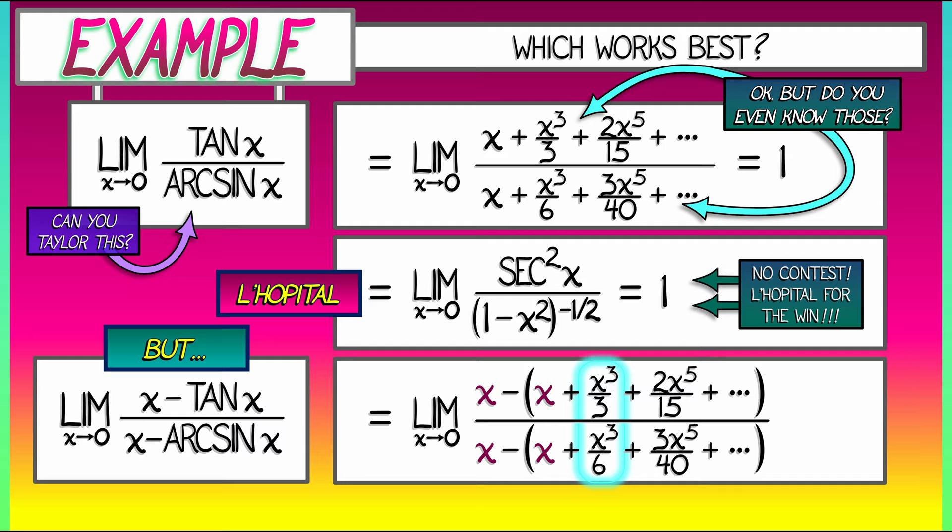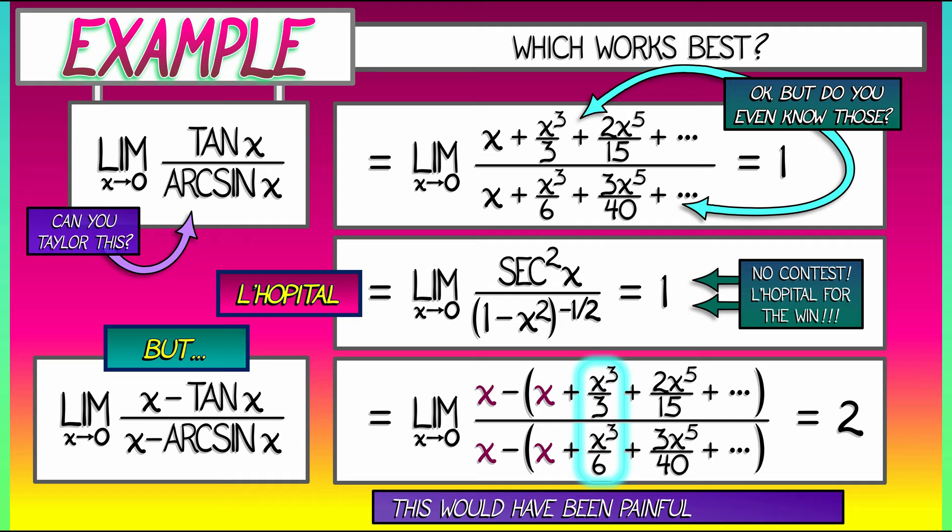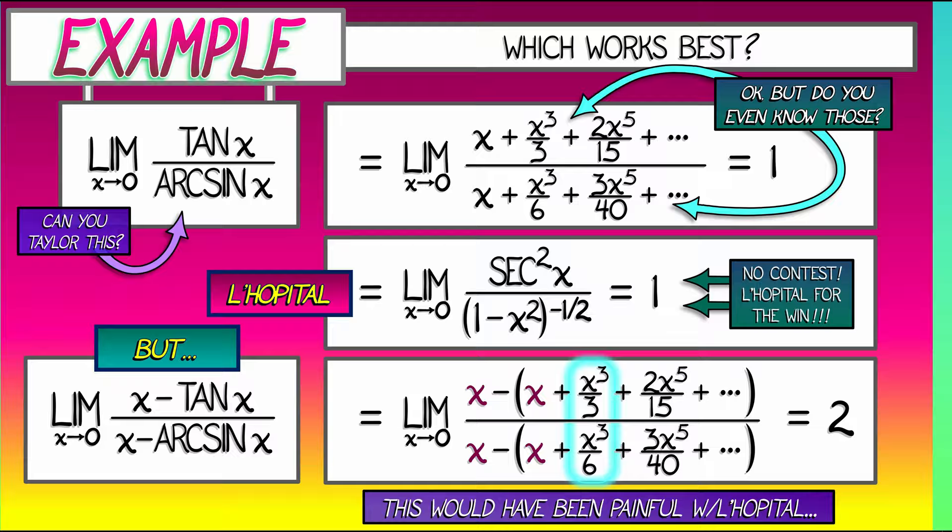What we get in the end when we evaluate that limit is one-third divided by one-sixth. That's two, the final answer. Now could we have done this with L'Hopital? Yes, but it would have been a little painful. We would have had to have taken three derivatives of the numerator of the denominator. That's not so bad, really. I think this is sort of an even match in terms of difficulty.